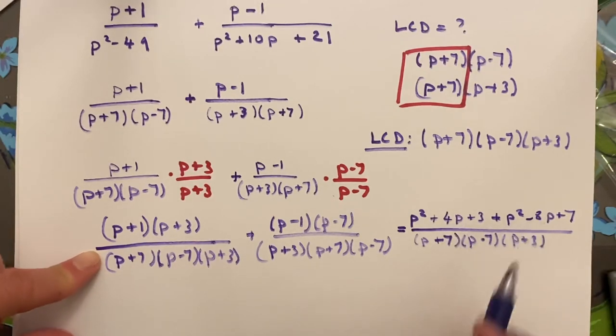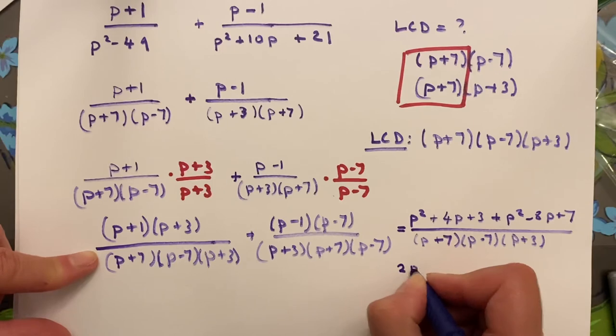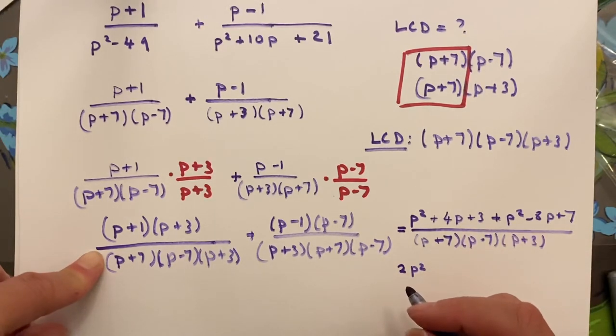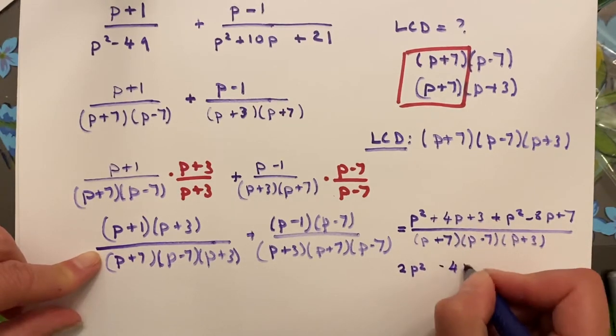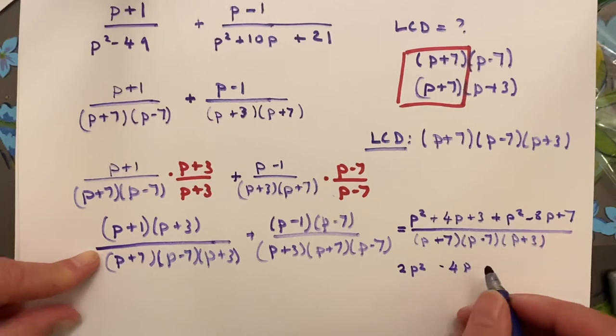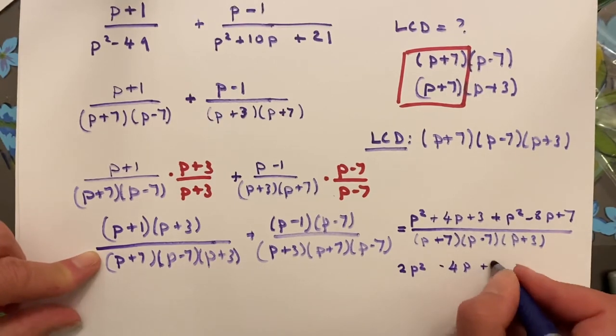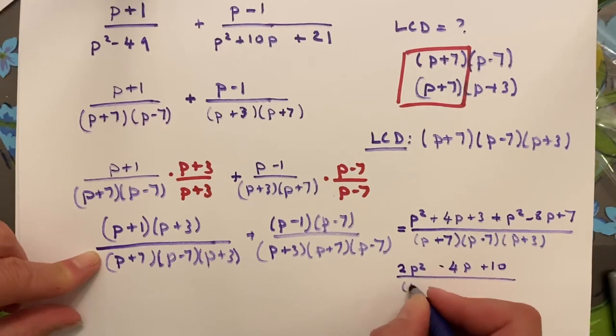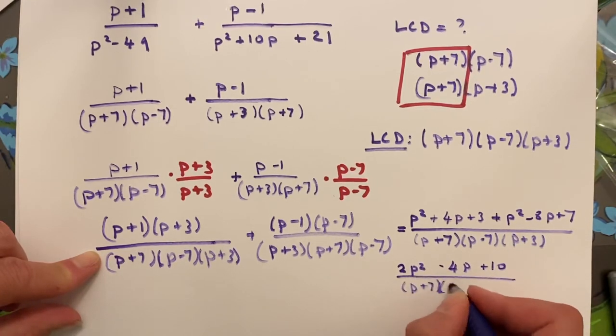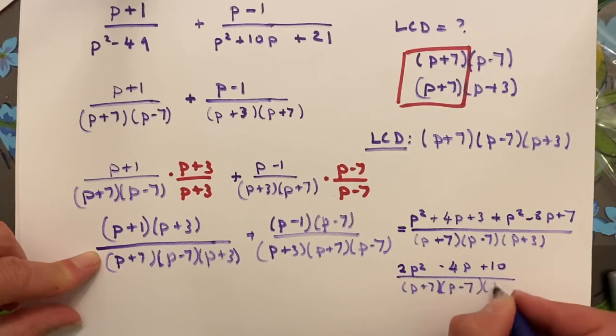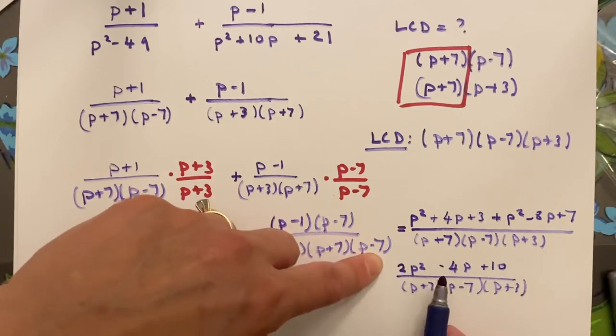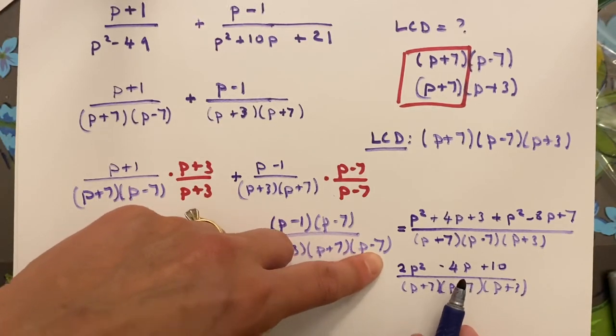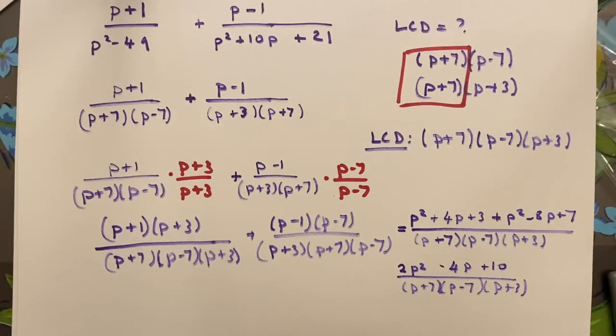I can combine all of these and get 2p squared, let's see, 2p squared minus 4p plus 10 over p plus 7, p minus 7, p plus 3. And if I try to factor this, and you probably should try, but if I try, I will find that I cannot simplify it any further. And so this is my answer.